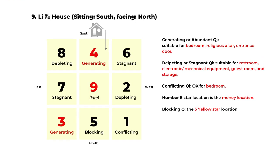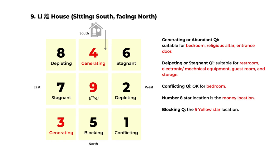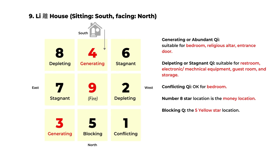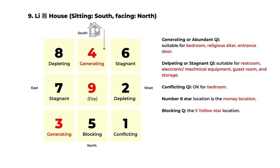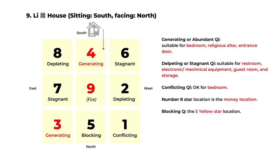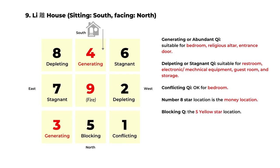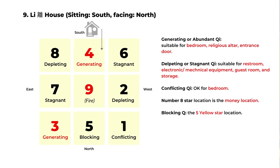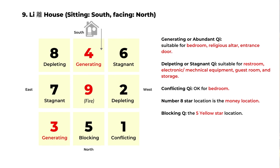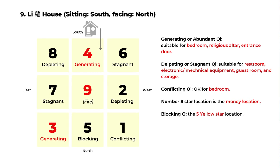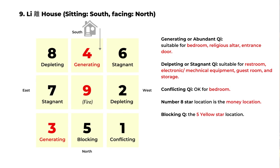The last chart is the Li house — that's the number nine star in the center with the fire element. The Li house is a house sitting on the south side and facing north. The generating Qi is in the northeast and south, and the number eight money star is in the southeast. That covers the basics of the eight flying star house charts.